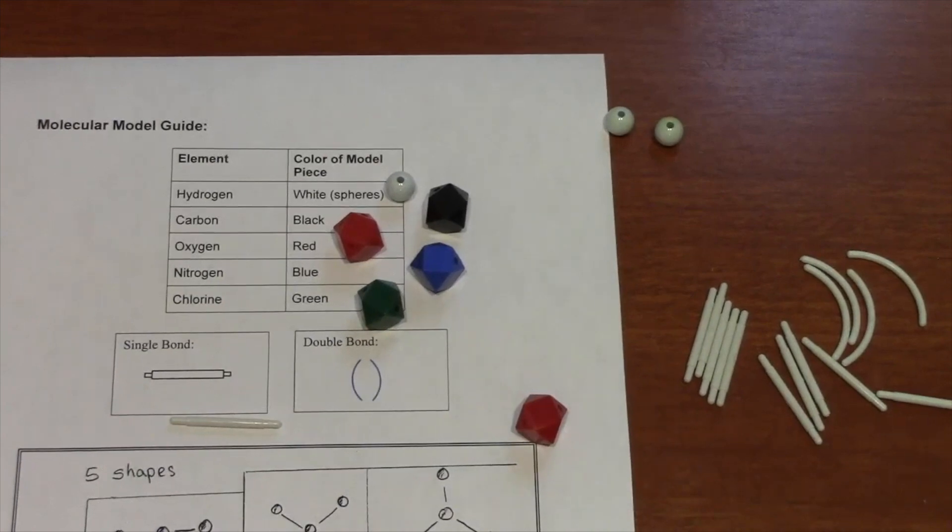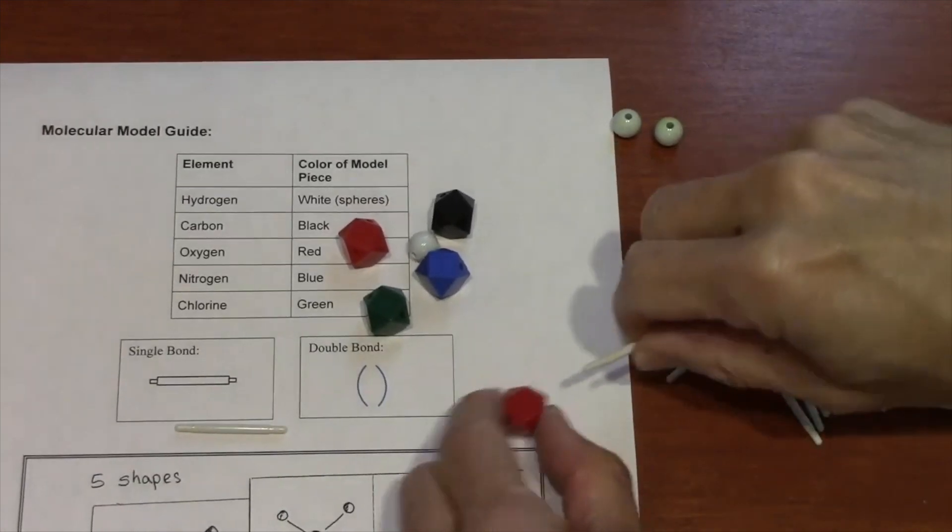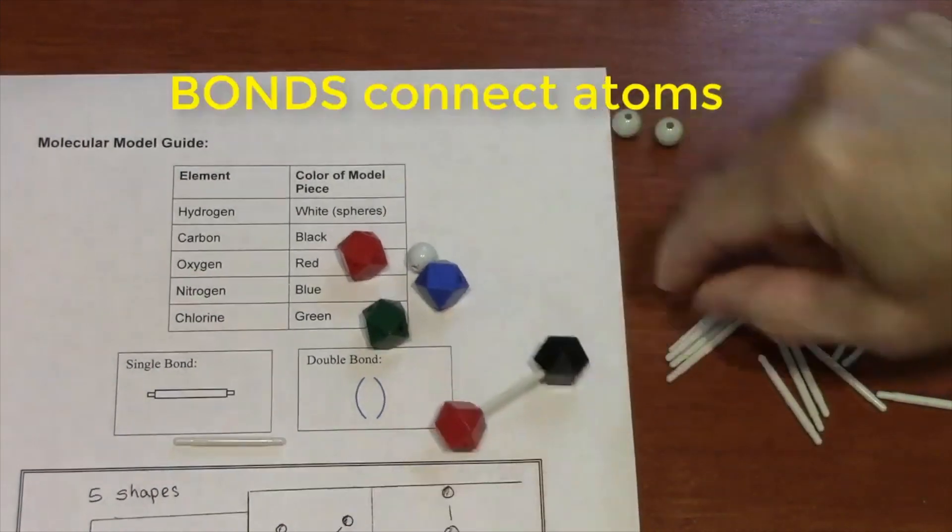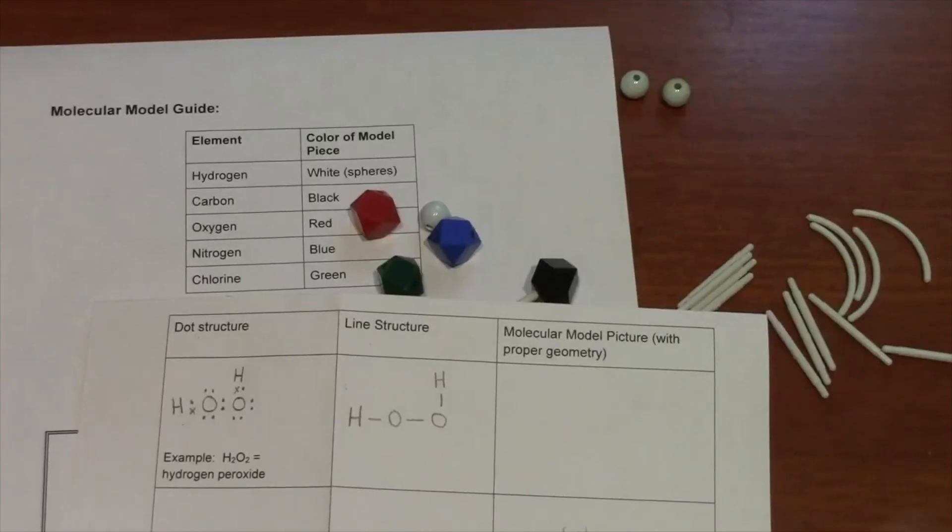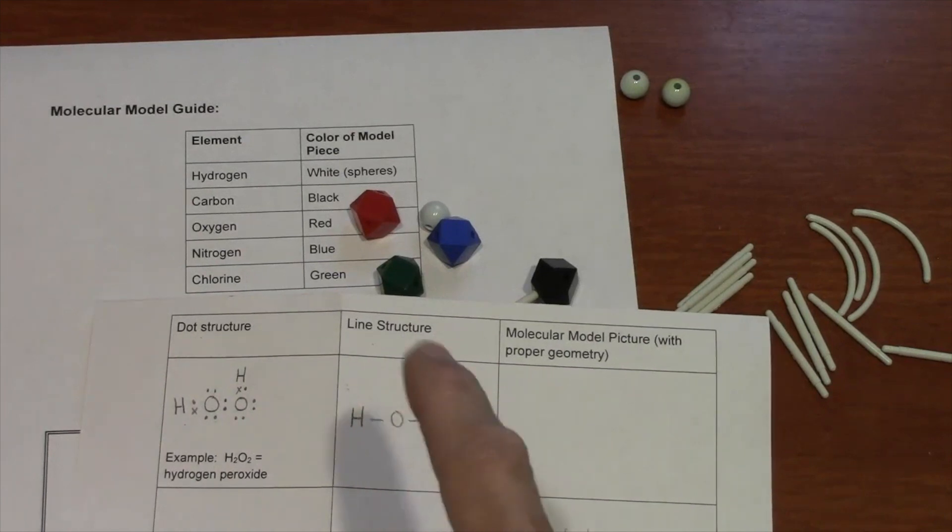To build a molecule, you use the pegs to connect blocks together. For example, I've connected a carbon to an oxygen. Your dot structures and line structures will tell you where to put the bonds. I'll show you this example here.